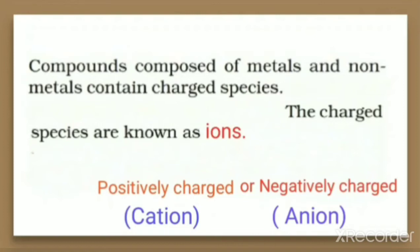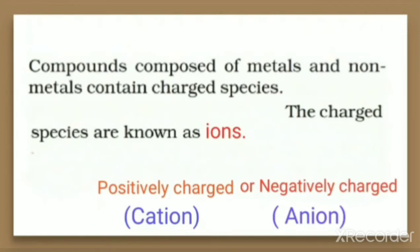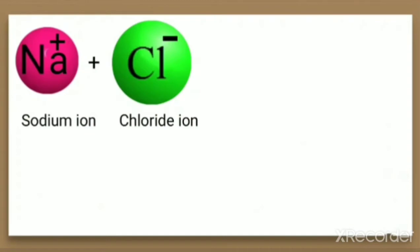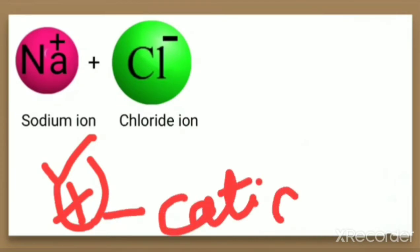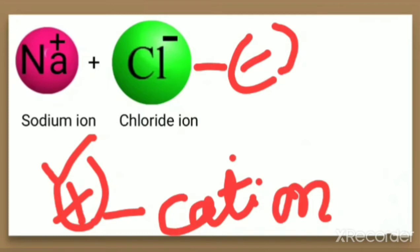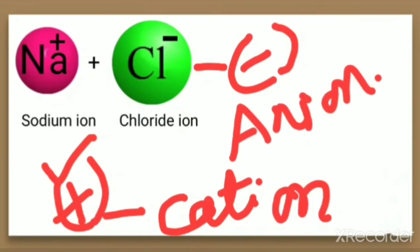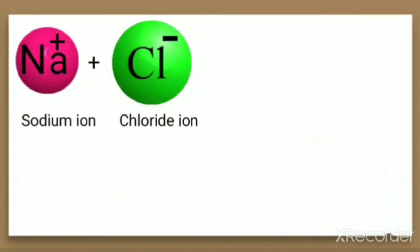Positively charged ions are called cations, and negatively charged ions are called anions. From the two examples we have taken — sodium ion and chloride ion — can you tell which one is the cation? Yes, sodium ion has a positive charge, therefore it is called a cation. Chloride ion has a negative charge, so it is an anion. Positively charged ions are cations and negatively charged ions are anions.